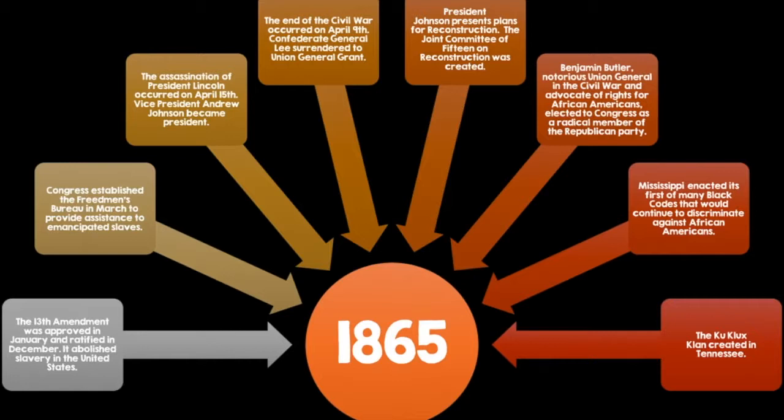The Joint Committee of 15 on Reconstruction was created. Benjamin Butler, a notorious Union general in the Civil War and advocate for rights for African Americans, was elected to Congress as a radical member of the Republican Party. Mississippi enacted its first of many black codes that would continue to discriminate against African Americans. The Ku Klux Klan was created in Tennessee.